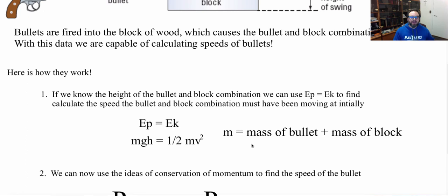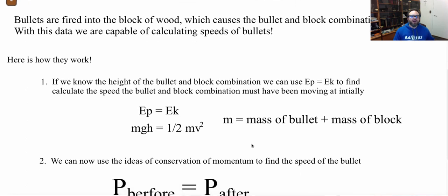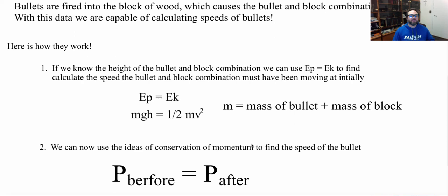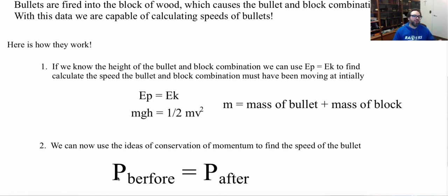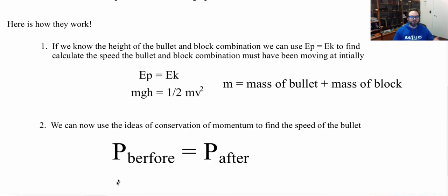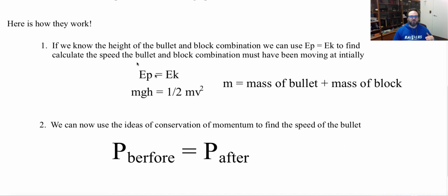So once we have that up, step two, we can now use the ideas of conservation of momentum to find out the speed of the bullet. So once I know the speed of our block moving with the bullet in it, then we use the momentum of that, what must be the momentum of that equal to the momentum of this whole system beforehand, where the block's not moving. So we are able to find the speed of the bullet. So let's see how that works with an example.